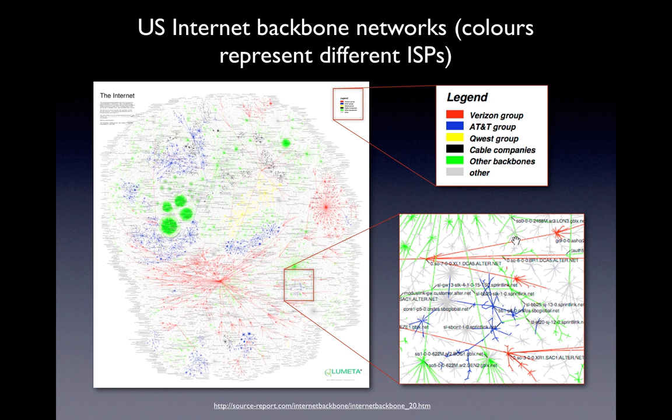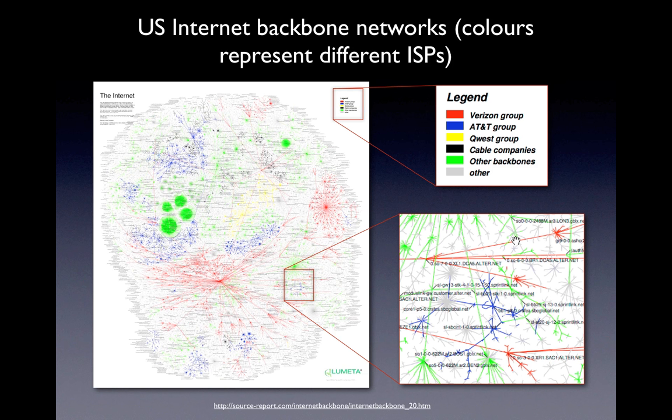You might often hear that nobody owns the internet, and that's true to an extent. But when you're talking about the cables that carry the data, someone does have to own and maintain them, and since the mid-90s this has mostly been commercial telecommunication companies. This is a network map of the major connections between nodes in the United States, colour-coded by which corporation owns and manages them — the big ones being Verizon and AT&T. Likewise in Australia it's essentially Telstra that owns the network.